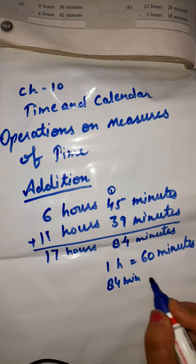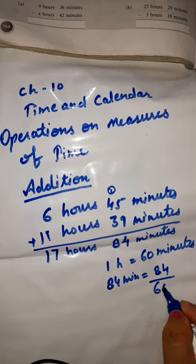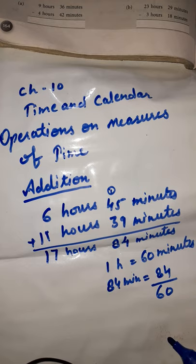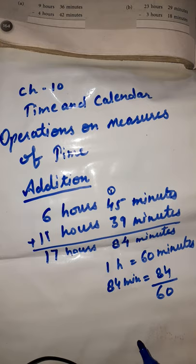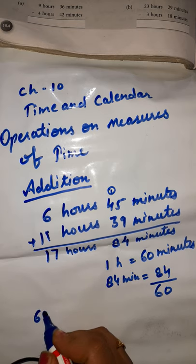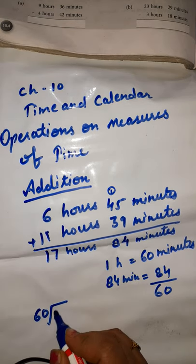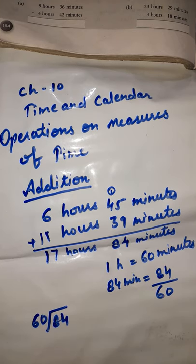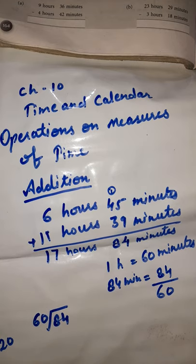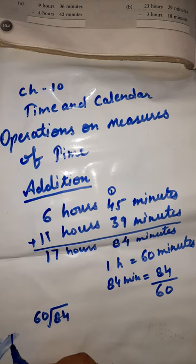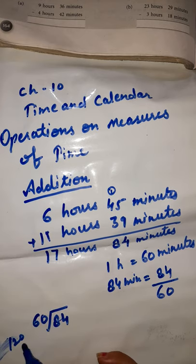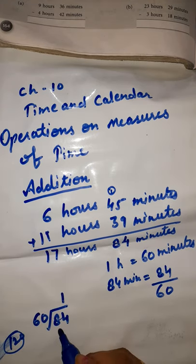So 84 divided by 60. We will divide it in the rough column. You don't need to know the table of 60 — just recite the table of 6 only. 60 ones are 60. 60 twos are 120. Since 120 is greater than 84, we write only 1. 60 ones are 60.